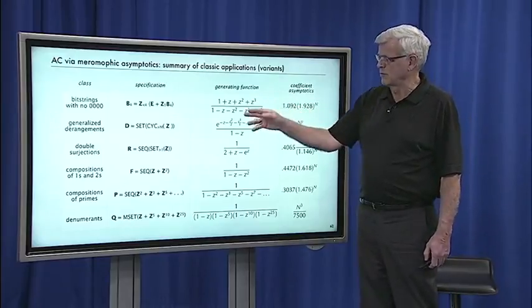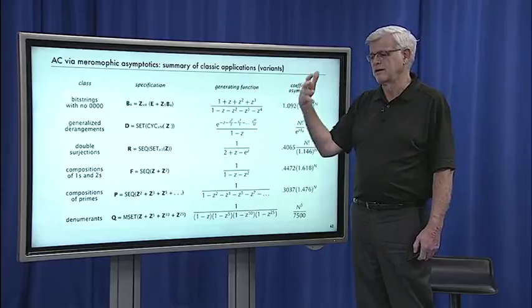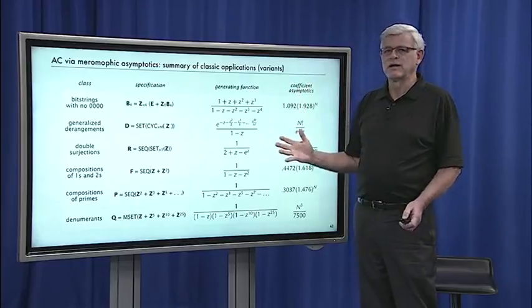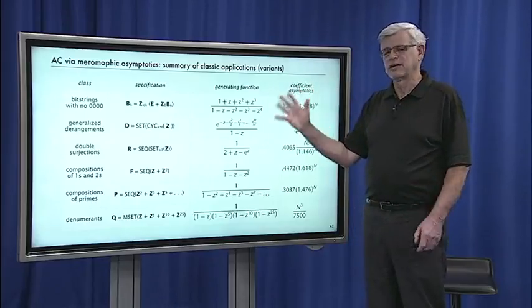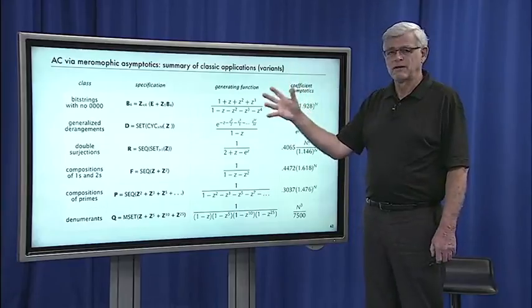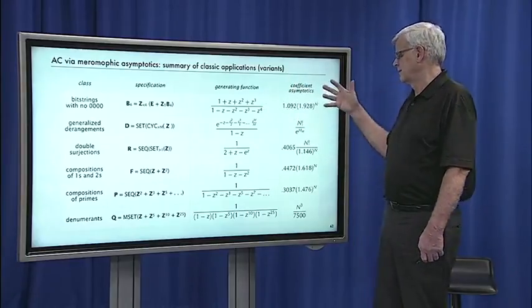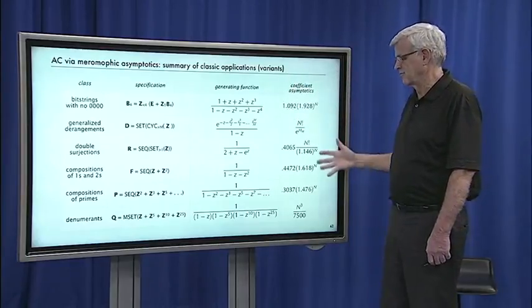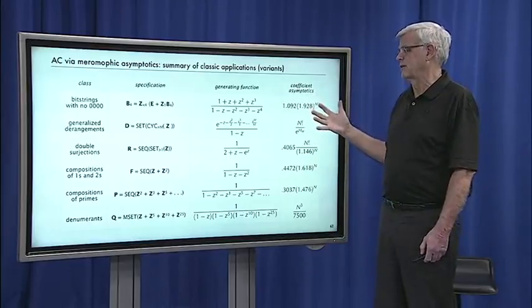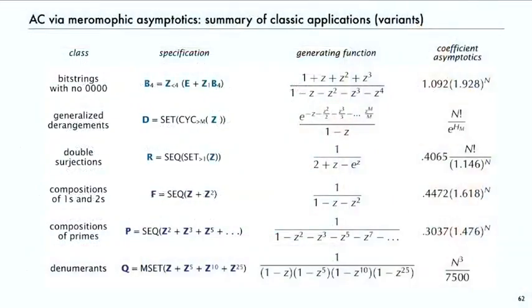And that's important because the idea of a spec gives us an open-ended way to specify combinatorial classes without having to worry that we may not be able to understand their coefficient asymptotics. Actually we can for this huge set of combinatorial classes.